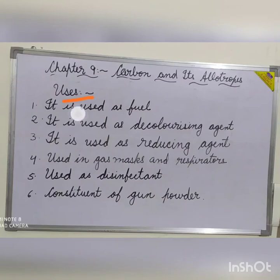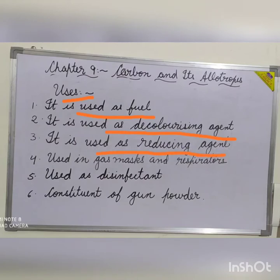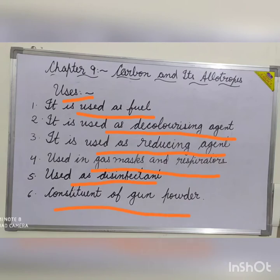Uses of wood charcoal: it is used as a fuel because of its low ignition temperature. It is used as a decolourising agent — it can absorb colouring matter from sugar solutions, oils and petroleum products. It is used as a reducing agent for the reduction of metal oxides to free metals. It is used in gas masks and respirators to absorb harmful gases. It is also used as a disinfectant for water purification. It is a constituent of gunpowder, which is a mixture of charcoal, potassium nitrate and sulphur.